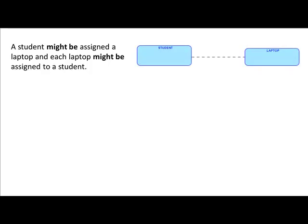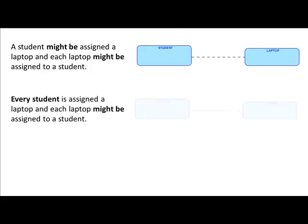For 'student might be assigned a laptop, laptop might be assigned to a student,' the entity relationship diagram looks like this — notice the dashed line. For the second variation — every student is assigned a laptop, but a laptop might be assigned to a student — the notation looks different. Notice that part of the line is solid and part is dashed, because every student is definitely assigned a laptop.